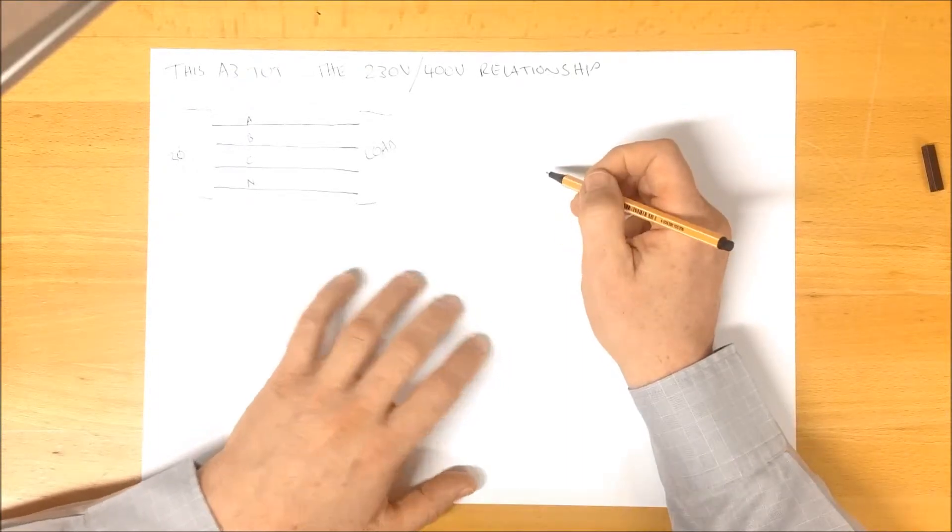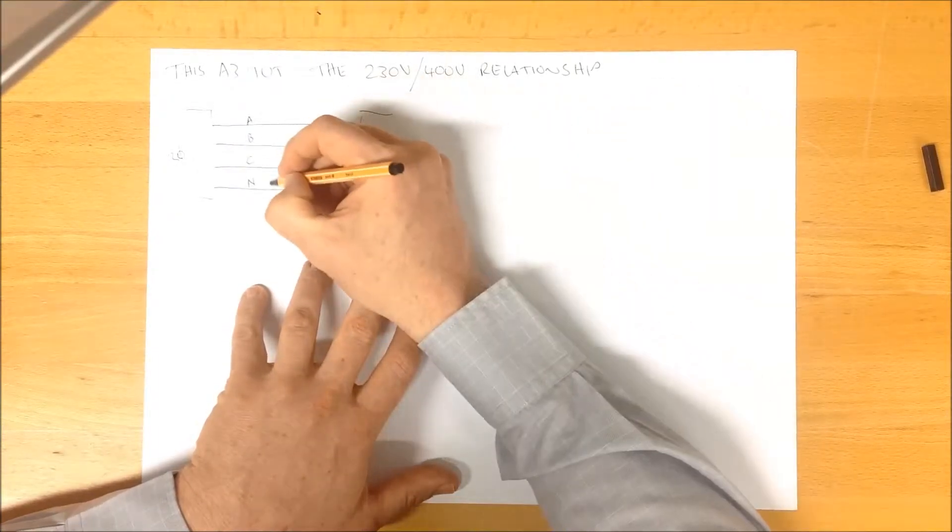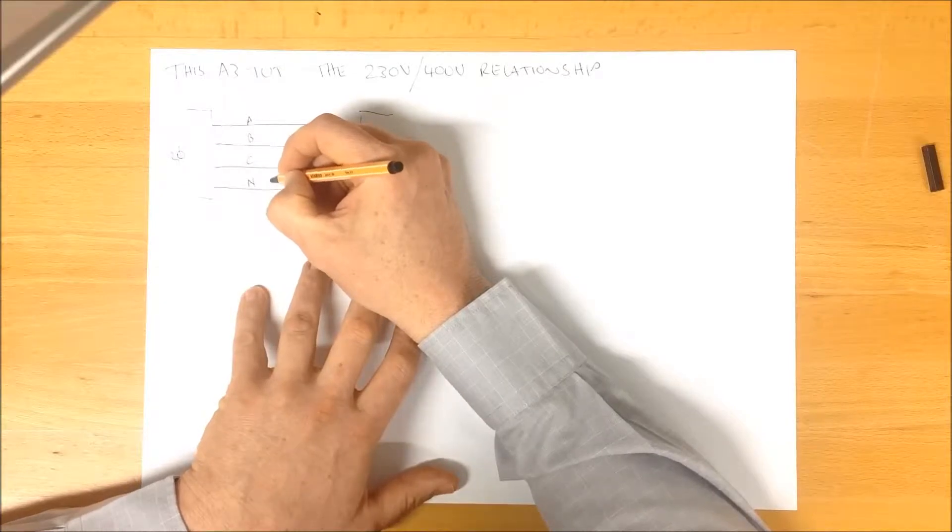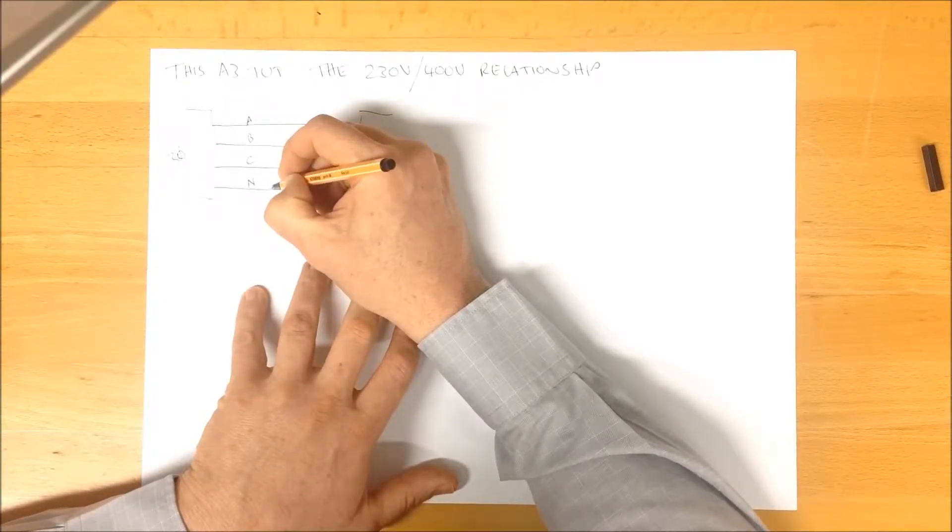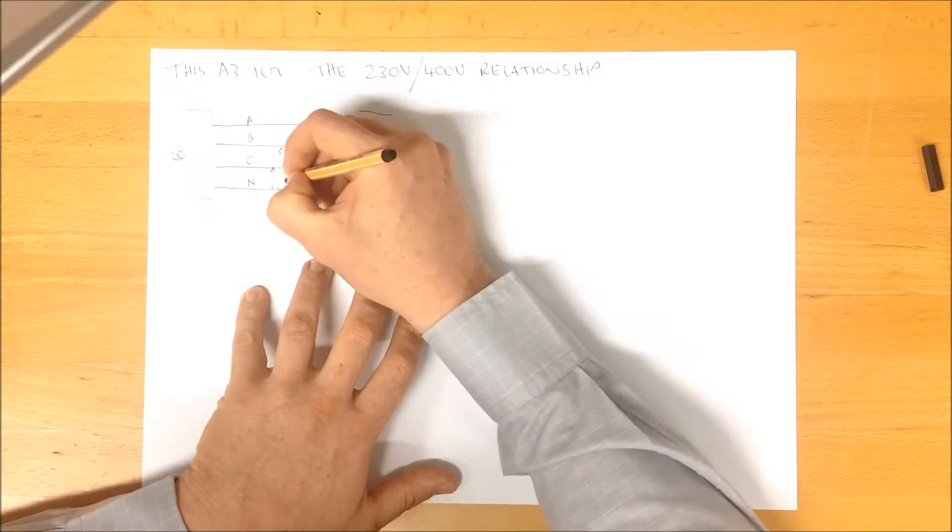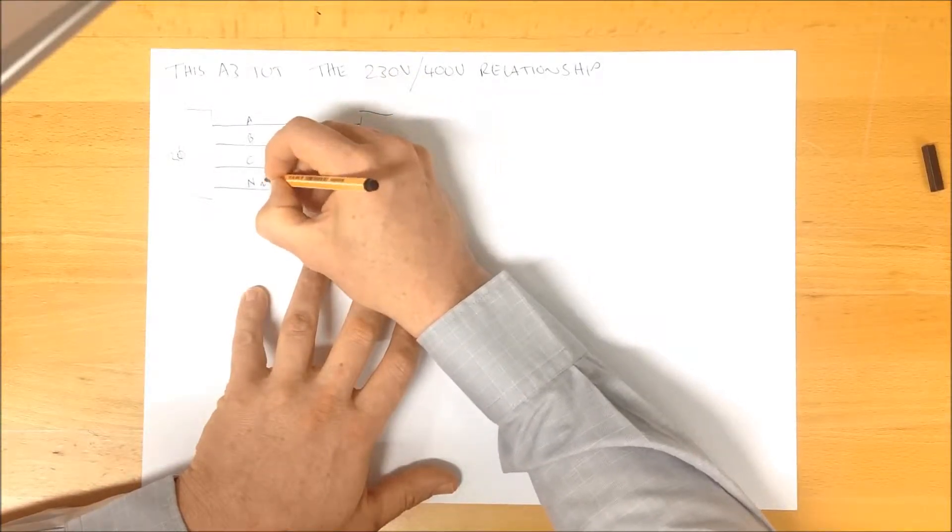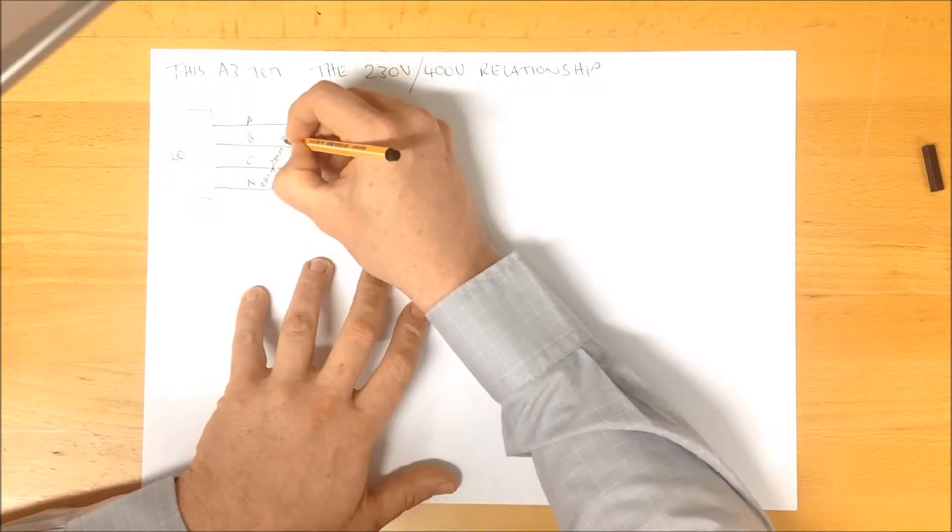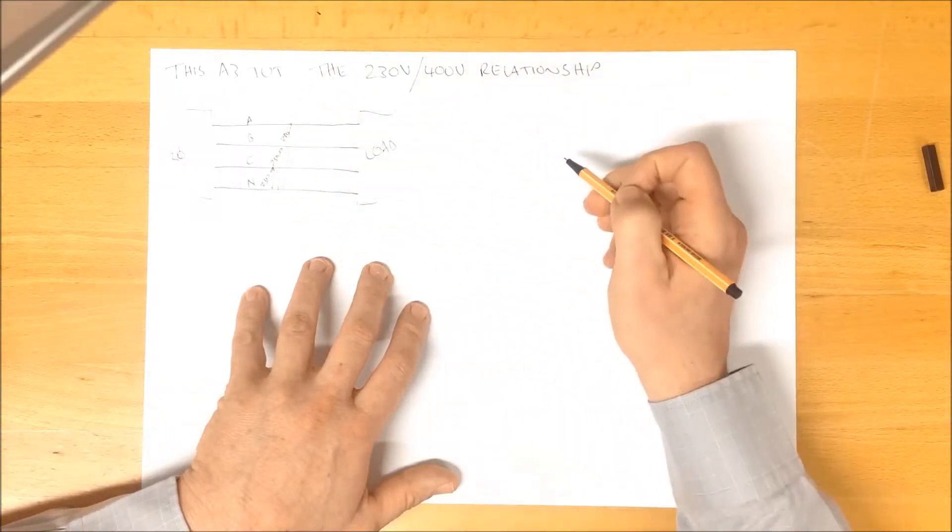And if you were to take a voltmeter and you were to do some measuring here, you would measure an RMS voltage of around about 230 volts between the neutral wire and any of these phases. 230, 230, and 230.